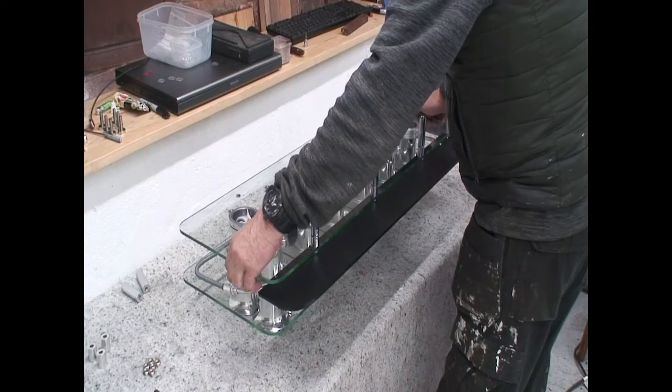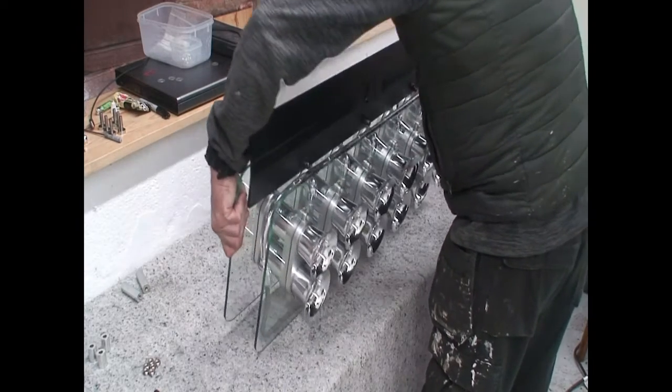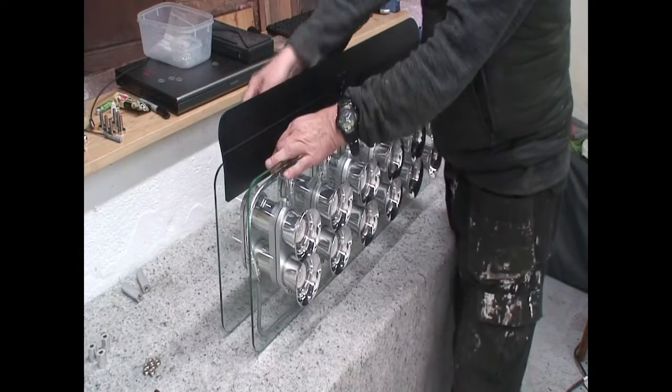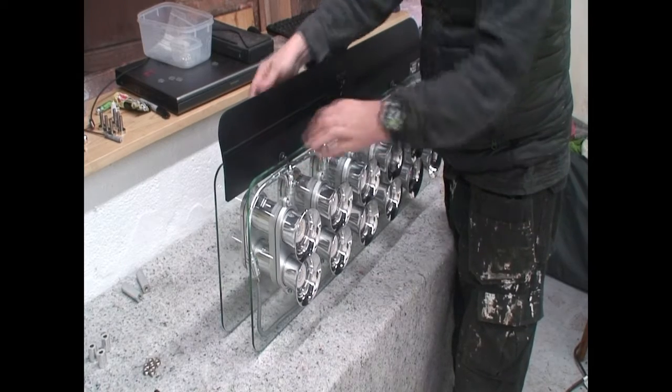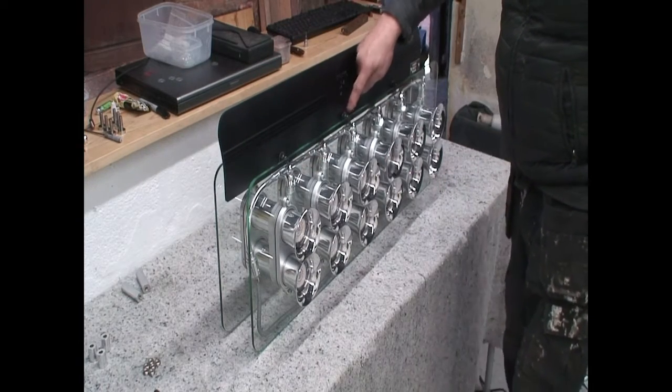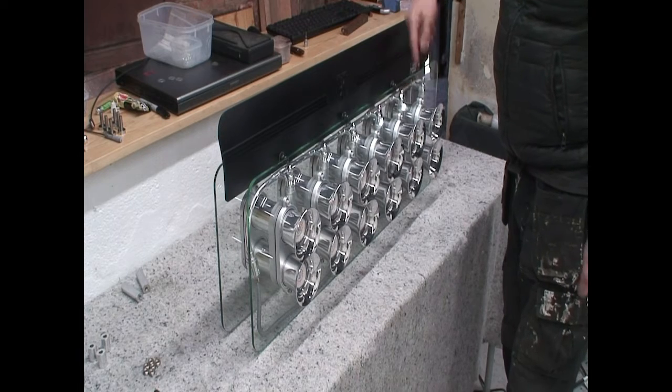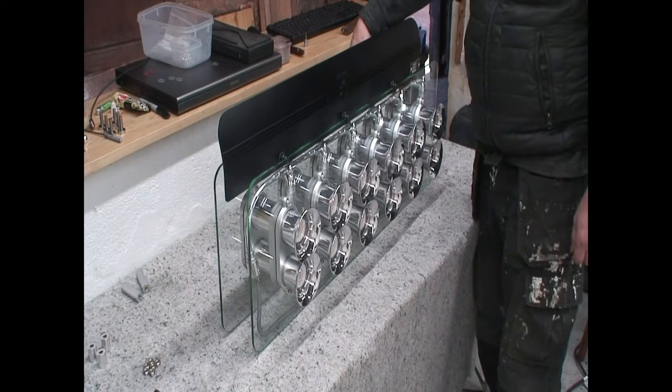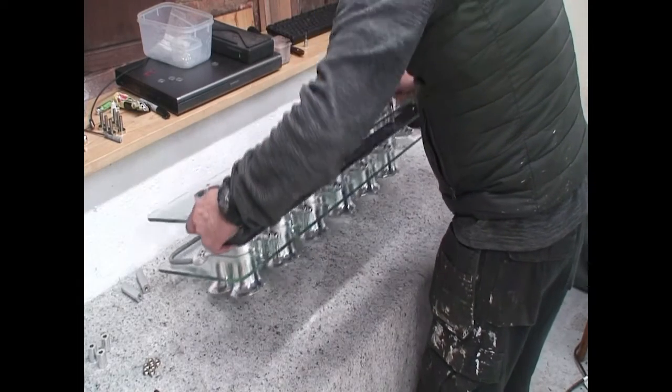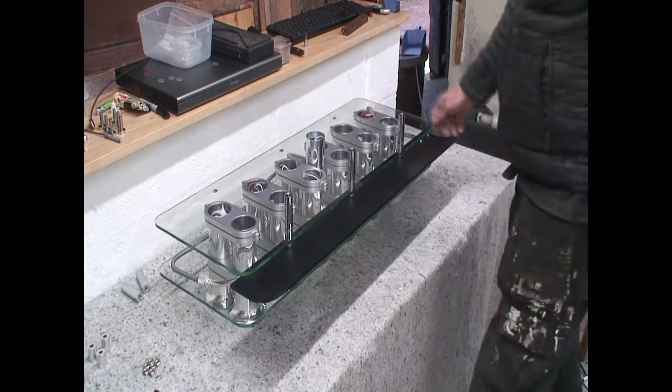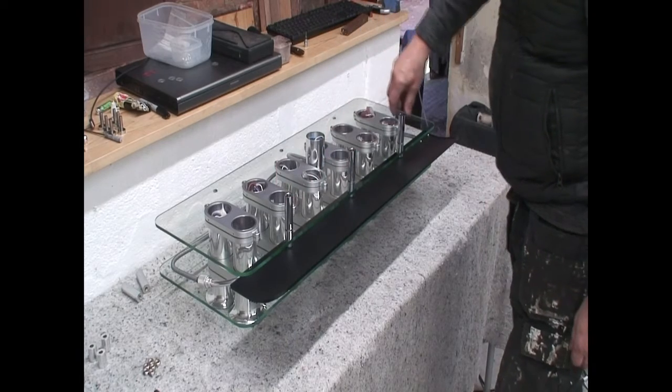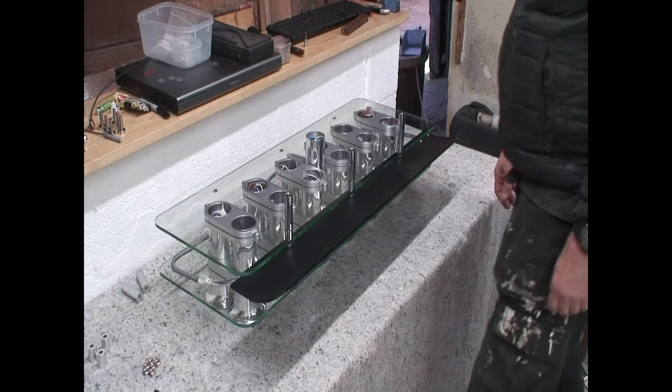Okay, flip the chandelier onto its side and tighten these three nuts up. One, two, and three. Make sure these ceiling studs are secure. Pop it back over again. Check. And they're all tight.